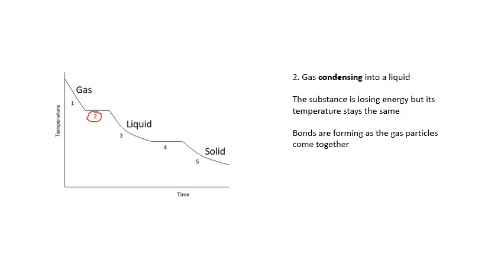Number two, the gas is condensing into a liquid. Notice that when this happens, the temperature stays the same. The temperature at which this particular gas changes to a liquid or liquid changes to a gas is the boiling point. The temperature stays the same. In the case of water, that's 100 degrees centigrade. As it's condensing, it is losing energy, but the temperature stays the same. What's happening is that the molecules are forming bonds, and as they form bonds becoming a liquid, energy is released.